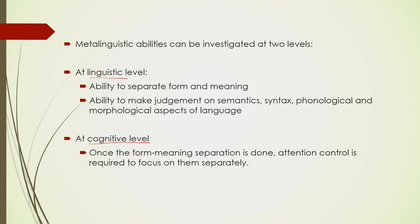At the linguistic level, metalinguistic understanding or awareness refers to the ability to separate form and meaning. Form and meaning — for example, the word 'sun' refers to a particular thing; 's-u-n' is the form and what it represents is the meaning. The ability to separate these two is at the very root of metalinguistic awareness. And then the ability to make judgments on semantics, phonology, morphology, and various syntactic aspects of language — this is metalinguistic understanding at the level of language.